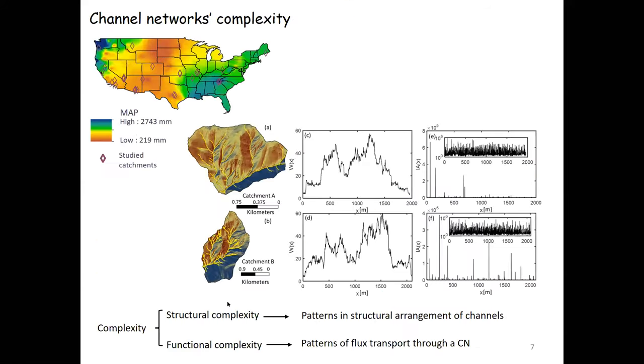For this work, we used 40 different basins across the United States pertaining to different climatic conditions, and we computed their width function and area functions. The width function is essentially a one-dimensional representation of a channel network. As you walk along the main channel, you count the number of channels intersected at a distance x from the outlet to the channel head. The area function is the cumulative drainage area at distance x from upstream, as you walk along the channel head to the outlet.